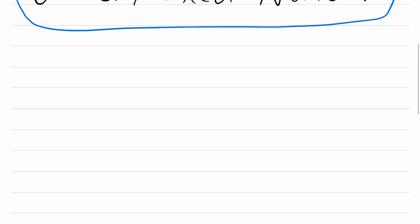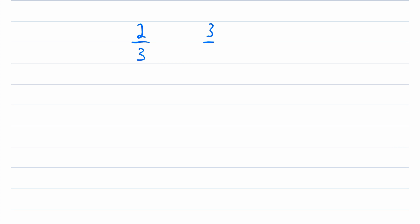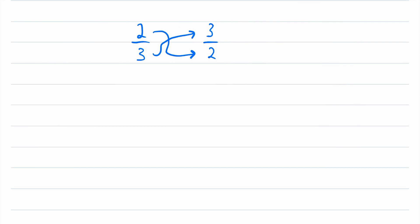You probably remember how to find the reciprocal of a normal fraction. For example, say we have 2 over 3. The reciprocal of this is just 3 over 2. We just flip the numerator and the denominator.